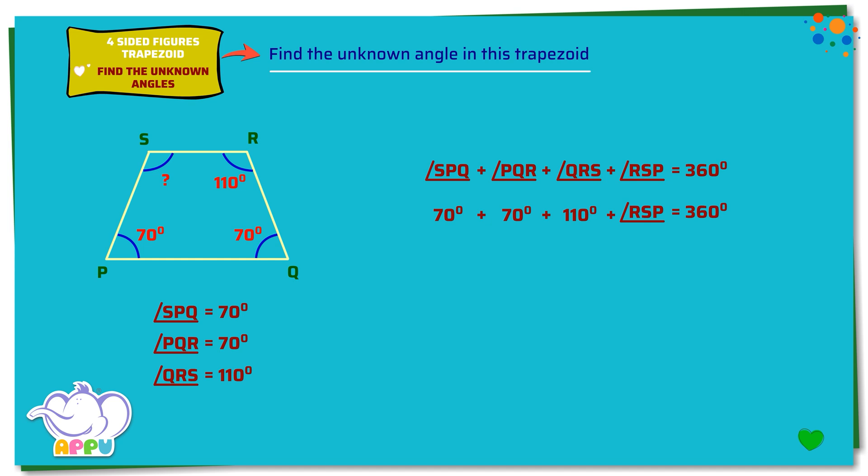250 degrees plus angle RSP equals 360 degrees. 250 degrees plus angle RSP equals 150 degrees. Angle RSP equals 110 degrees.